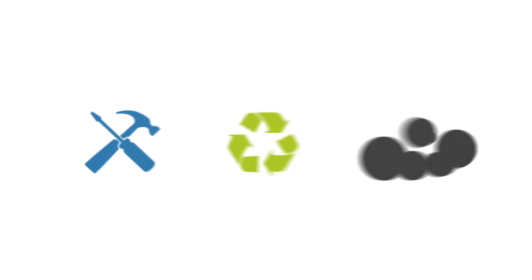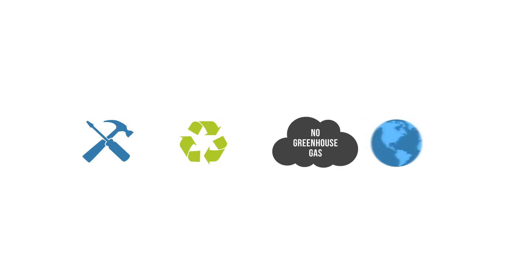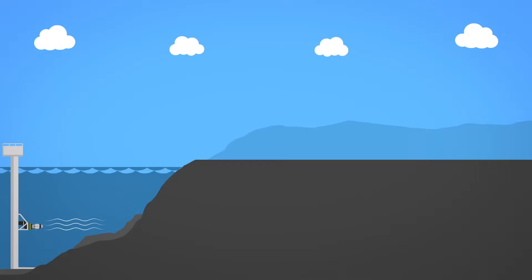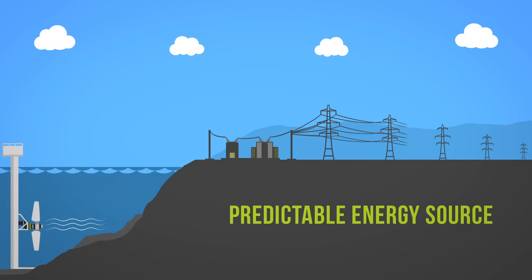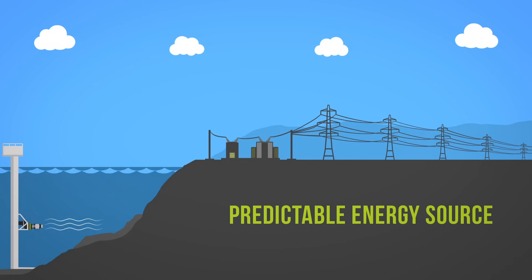Tidal power is easy to install and renewable, having no direct greenhouse gas emissions and a low environmental impact. Because the ocean's tidal patterns are well understood, tidal energy is a very predictable energy source, making it highly attractive for electrical grid management. This sets it apart from other renewables that can be more unpredictable.